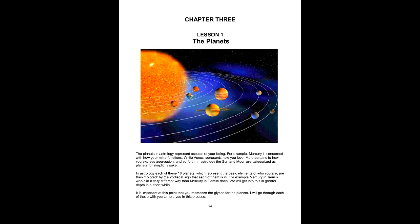In astrology, the sun and moon are categorized as planets for simplicity's sake. Each of these 10 planets, which represents the basic elements of who you are, are then colored by the zodiacal signs that each of them is in. For example, Mercury in Taurus works in a very different way than Mercury in Gemini does. We will get into this in greater depth in a short while.